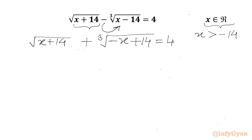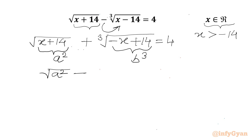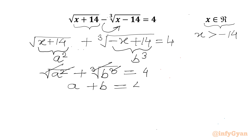Now we will use substitutions. Let the radicand of the square root equal a squared, and the radicand of the cube root equal b cubed. So we get square root of a squared plus cube root of b cubed equals 4, which simplifies to our first equation: a plus b equals 4.